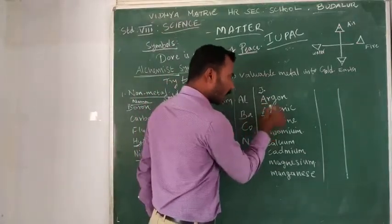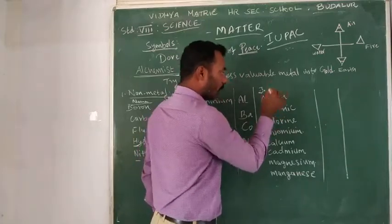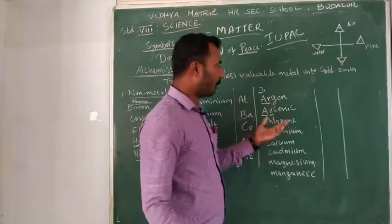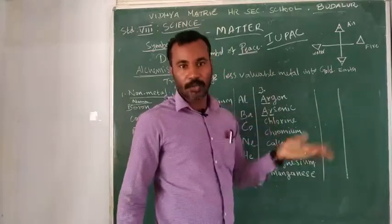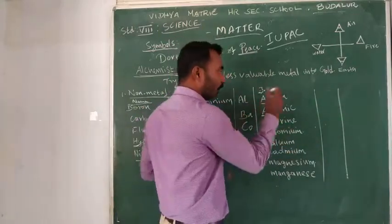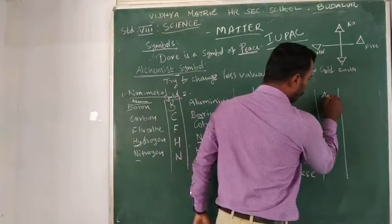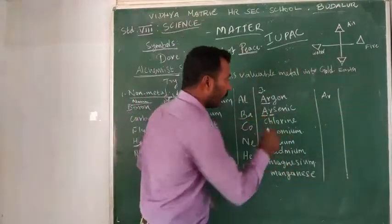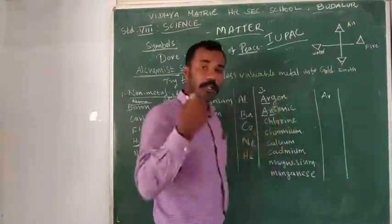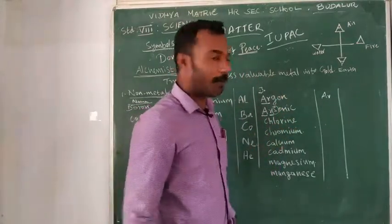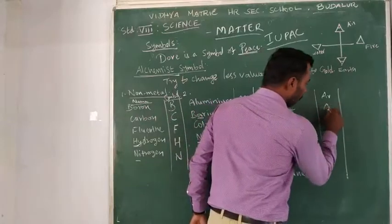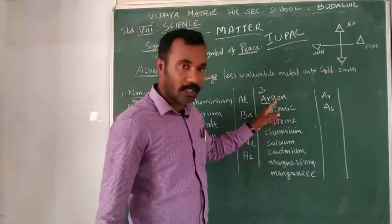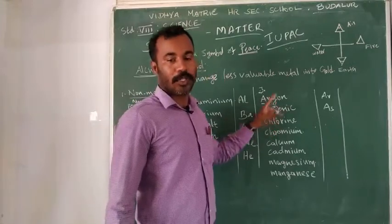For arsenic, the second letter is R — so A, R. But wait, we check again: arsenic — the symbol becomes As, taking the first letter A and second distinctive letter S.